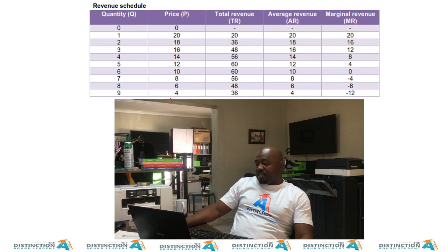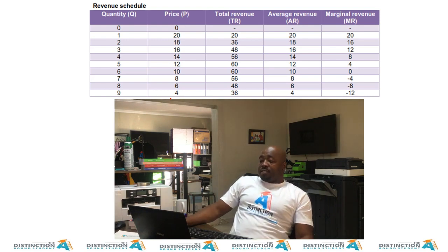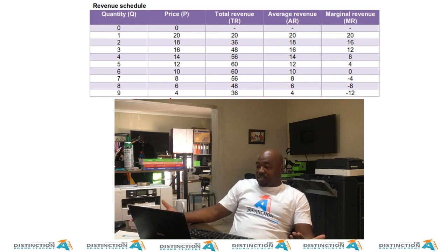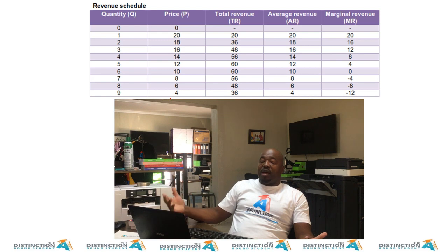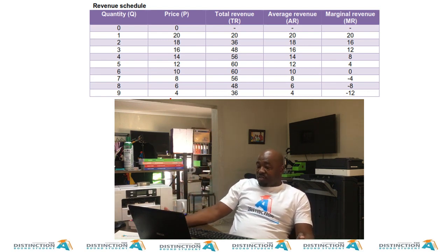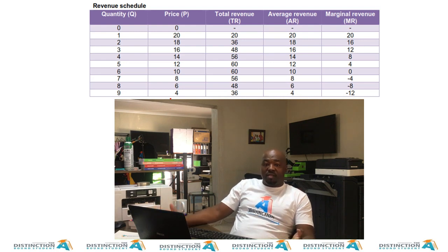So if you study this table, you can see that we have quantities from 0 to 9. We have price going down from 20 to as low as 4. We have total revenue going up and then it starts to go down. We have average revenue mirroring, doing exactly what the price is doing. We have marginal revenue dropping faster than price and AR.